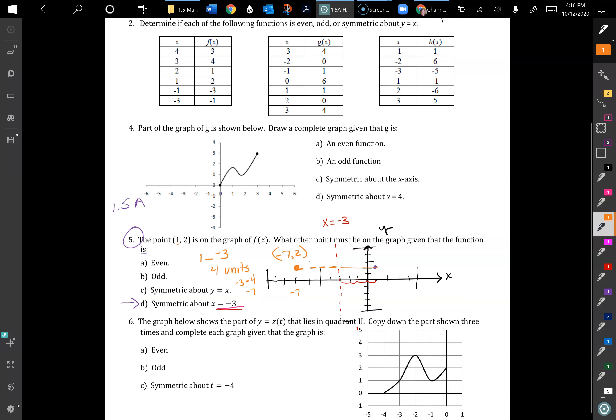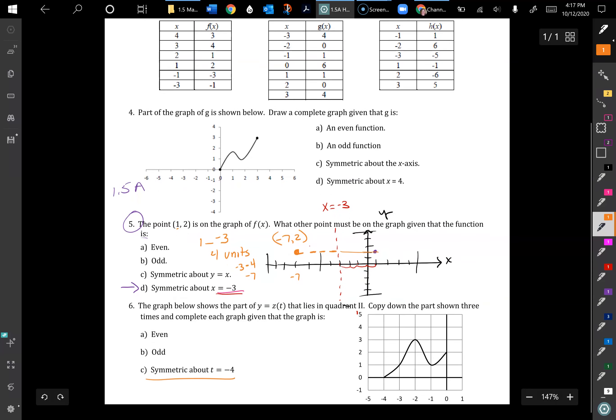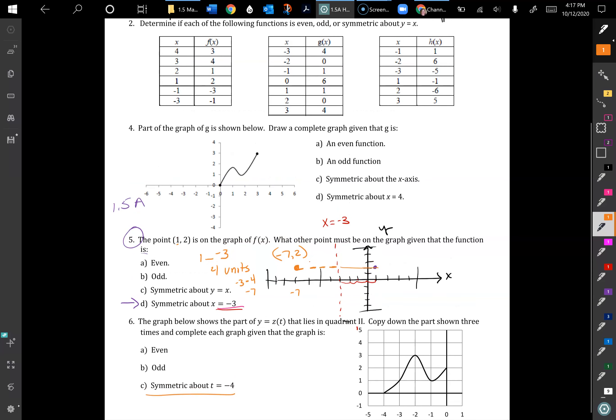So that is 5D. And then 6C is another one. We're given the graph this time and we want to know how it compares. The graph below shows the part y equals z of t that lies in quadrant 2. Copy down the part shown three times and complete each graph given that the graph is even, odd, or symmetric about t equals negative 4.